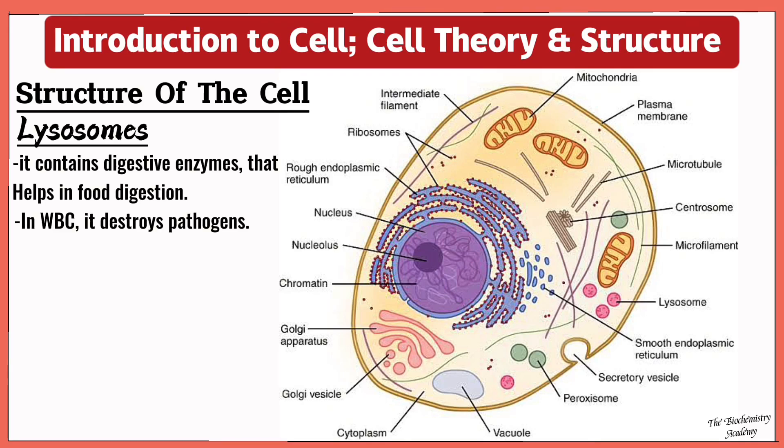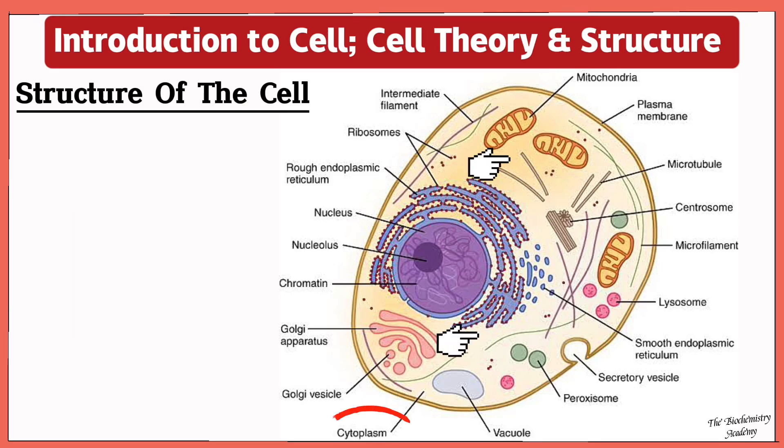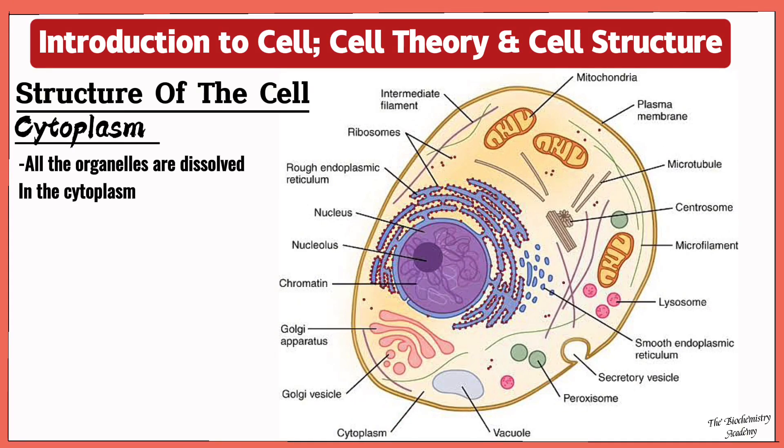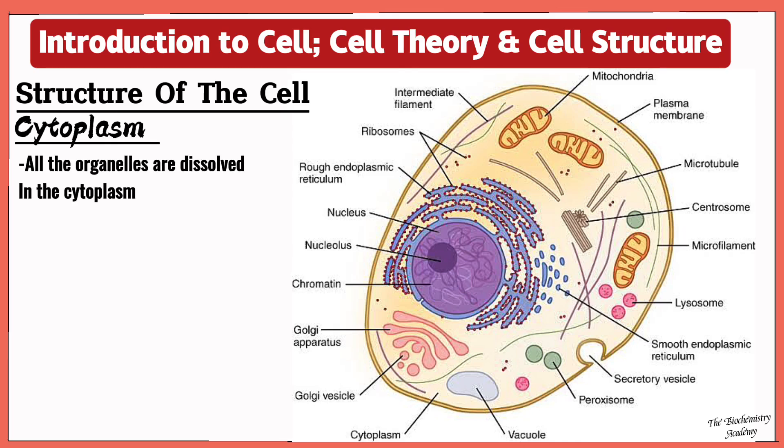Now the next organelle that we'll talk about is this jelly-like fluid. Now this fluid is called the cytoplasm. So all the organelles we just talked about are dissolved in the cytoplasm. The cytoplasm contains solutes like salt, electrolytes, carbohydrates, lipids, and so on.